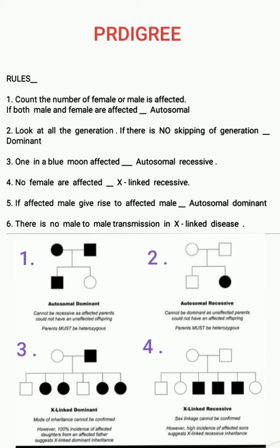To recap: Image one — all generations are affected with no skipping, so autosomal dominant. Image two — one in a blue moon affected, so autosomal recessive. Image three — no male-to-male transmission, so X-linked dominant. Image four — no females are affected, only males, so X-linked recessive. This is all about pedigree. Please subscribe and share my channel. Thank you.